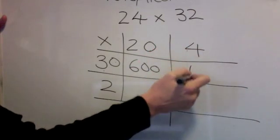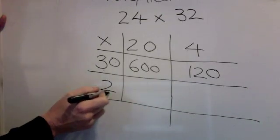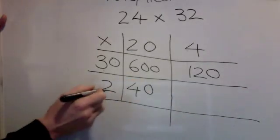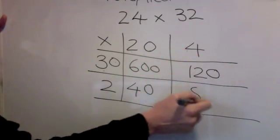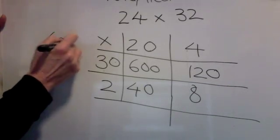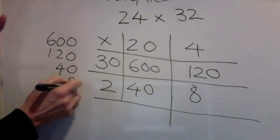3 times 4 is 12, one, zero. 2 times 2 is 4, one, zero. 2 times 4 is 8, no zeros. Add them together. 600, 120, 40 and 8.